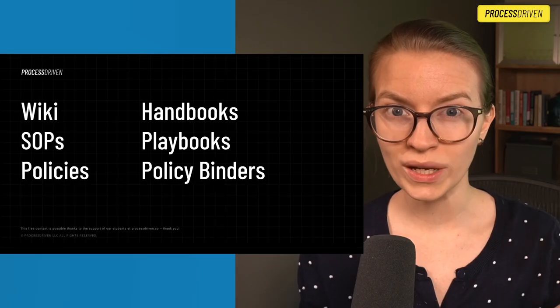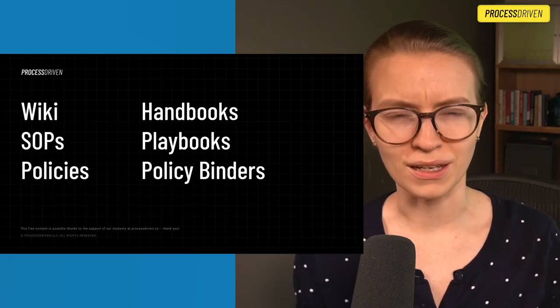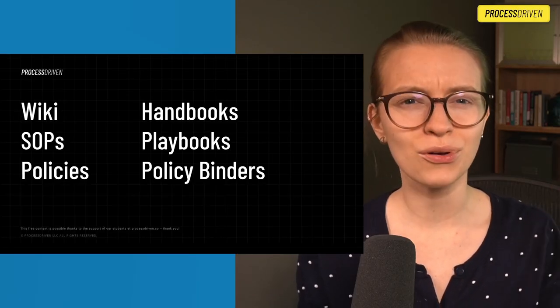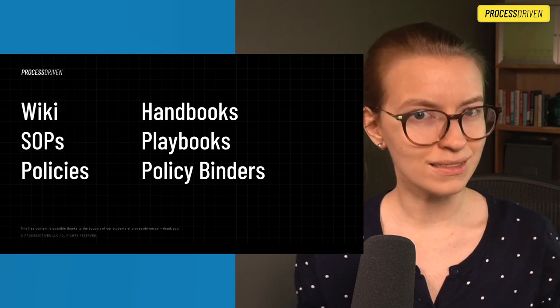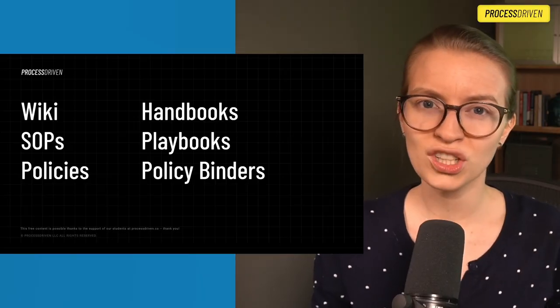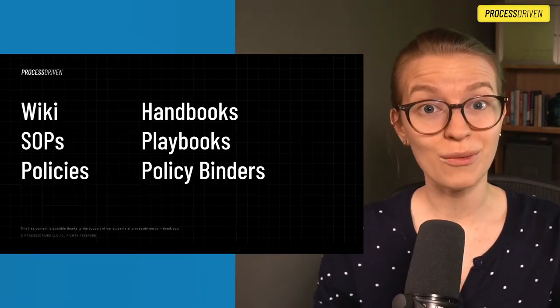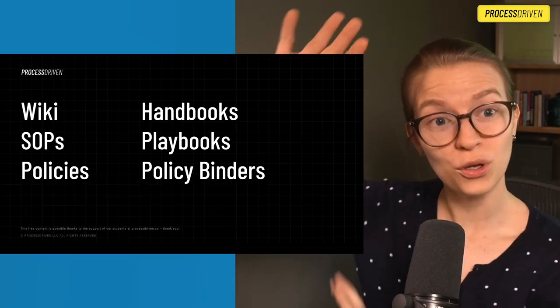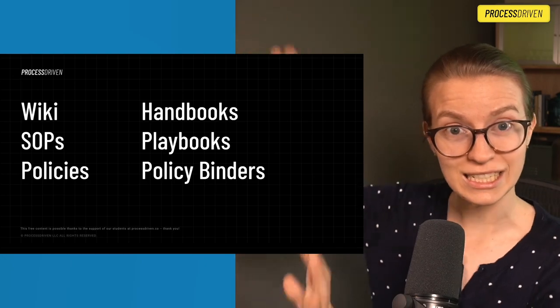What's the difference between a wiki, SOP, policy, handbook, playbook, and policy binder? This is not the opening to the world's worst process-related pun. This is an actual question that has been emailed in to me from one of you, when it came to the semantics of the process world. I thought it was a pretty good question, so I thought I would make a whole video about it. If you are wondering the difference between these terms, you're watching the right video.